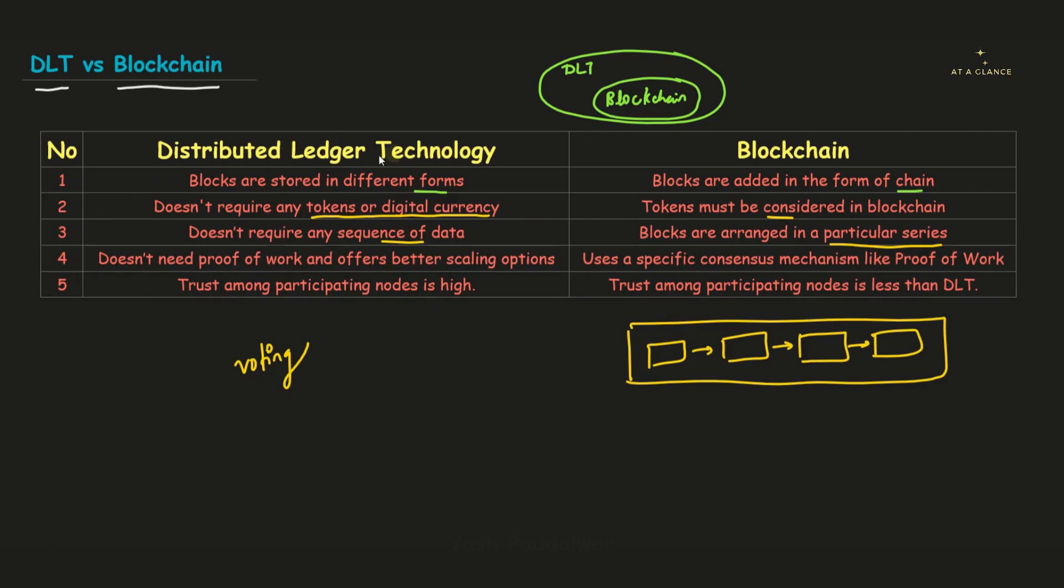Now remember one thing, DLT doesn't require the consensus mechanisms, for example, proof of work, which enables better scaling options. But if you remember in blockchain, the consensus mechanisms are required, for example, proof of work. Now, I already have given you a basic idea of how this proof of work consensus algorithm works in one of the previous videos.